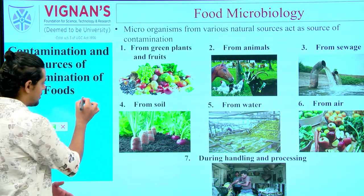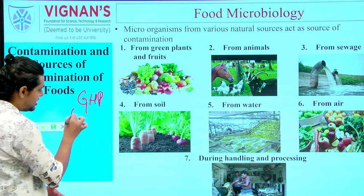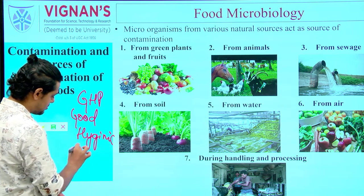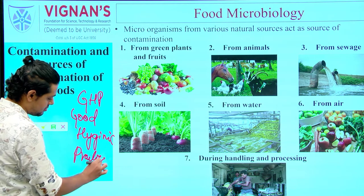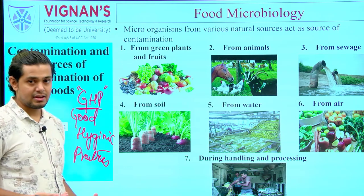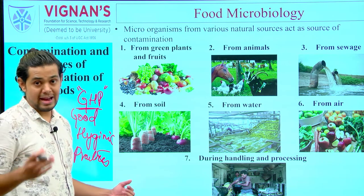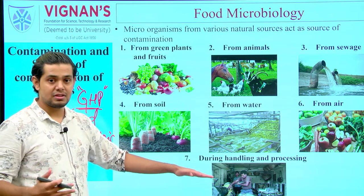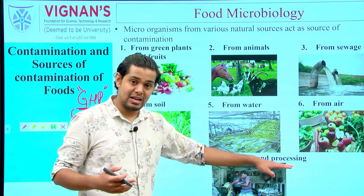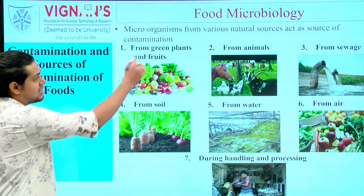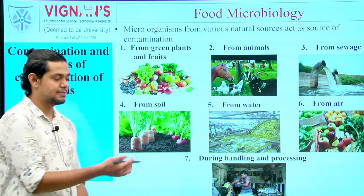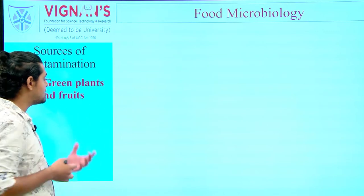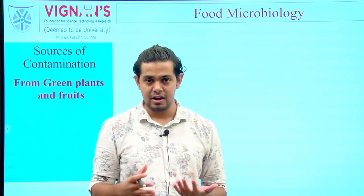If good hygienic practices and good manufacturing practices are in place, we can effectively avoid all possible sources of contamination during handling and processing of a food product. These are the potential sources of food contaminants through which food products undergo spoilage.